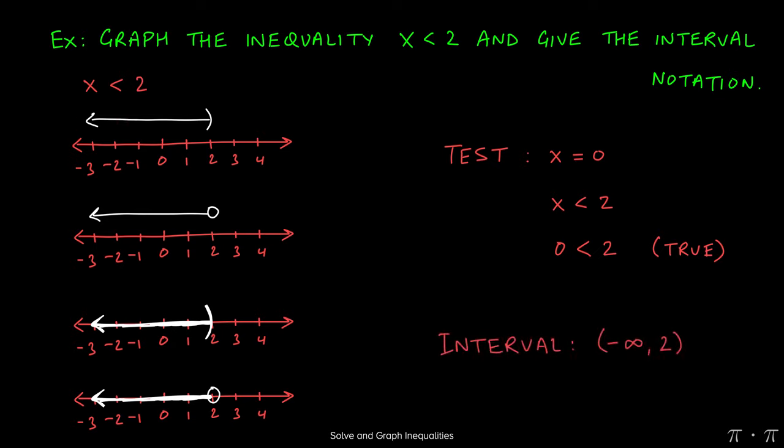The interval is always written from left to right. The leftmost endpoint is negative infinity, and the rightmost endpoint is 2. Because 2 is not included in the interval, we use parentheses to indicate that. So this means all the numbers between negative infinity and 2 will satisfy this inequality except for 2.